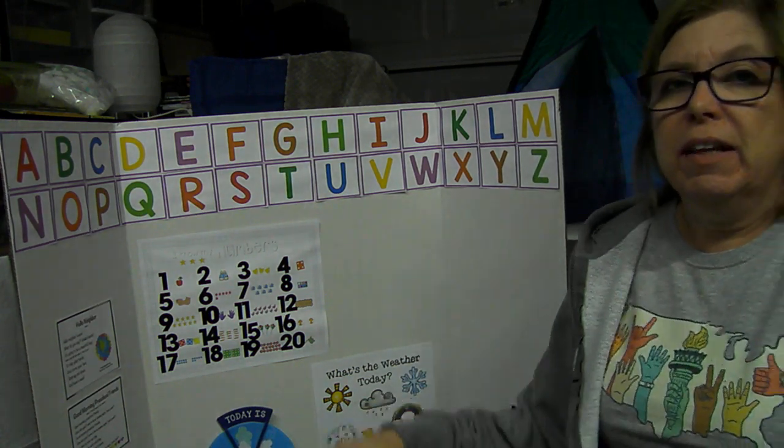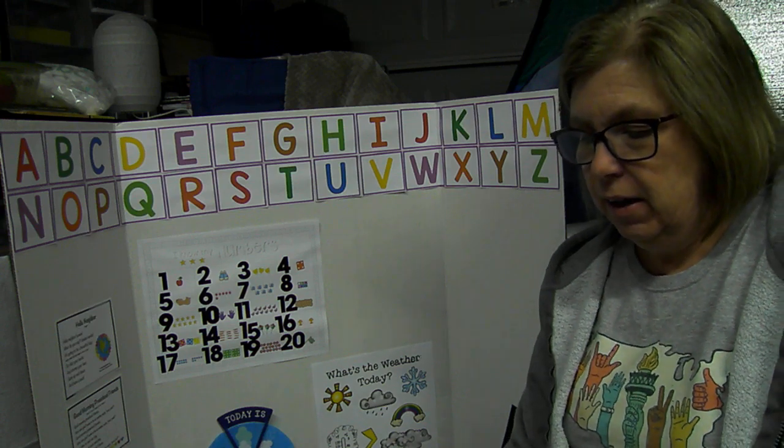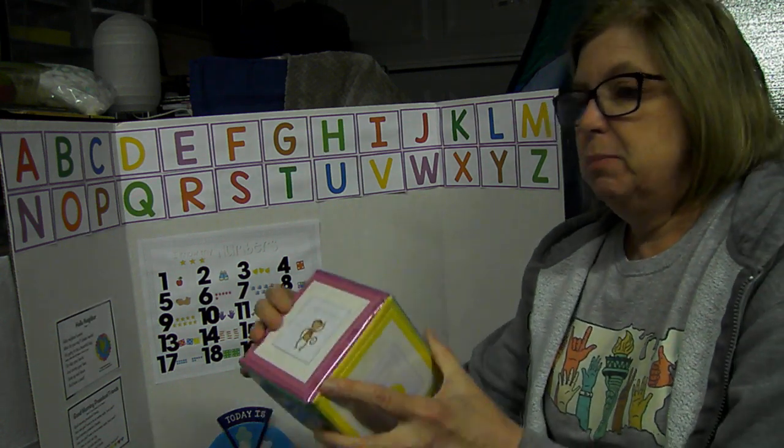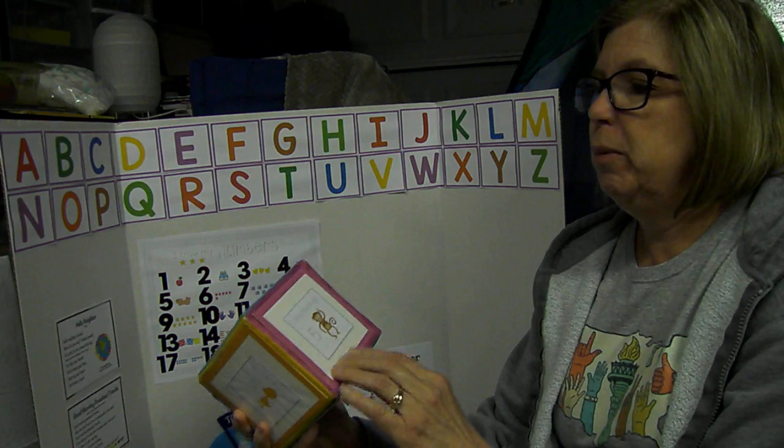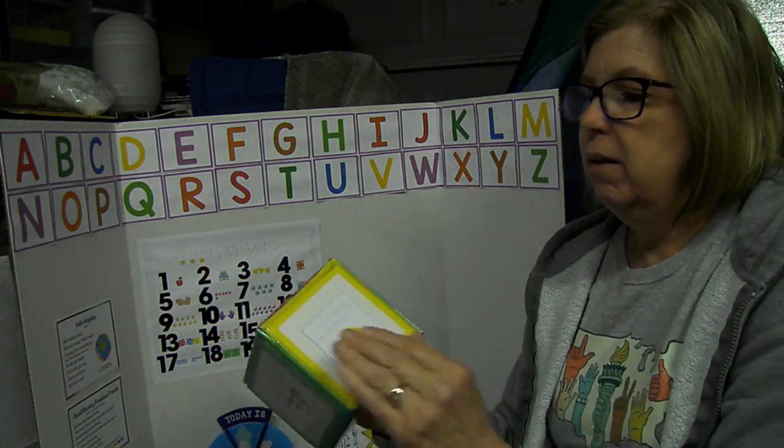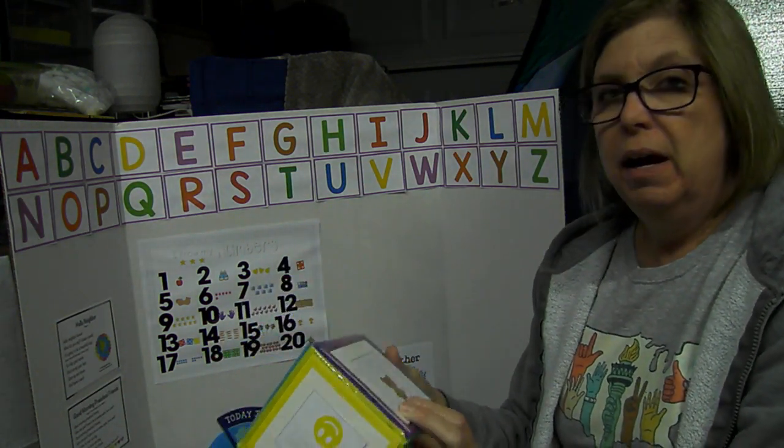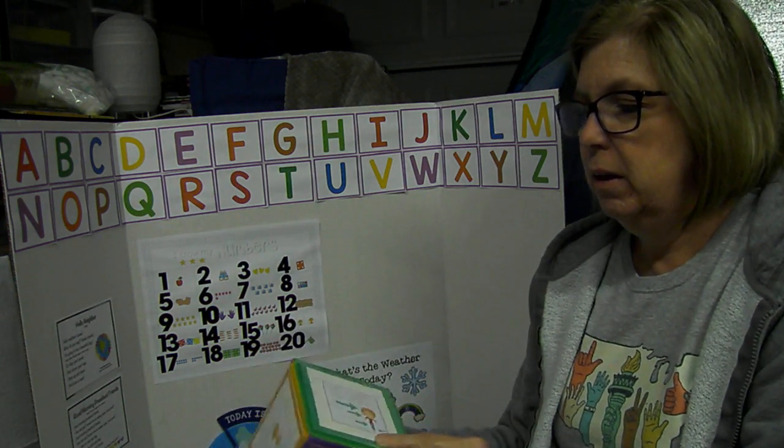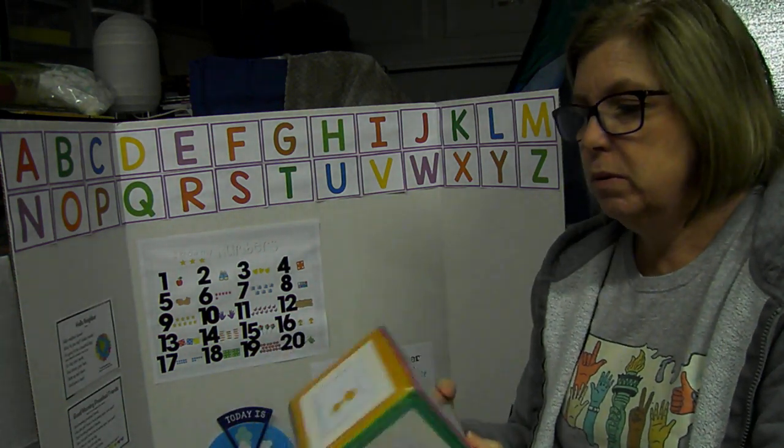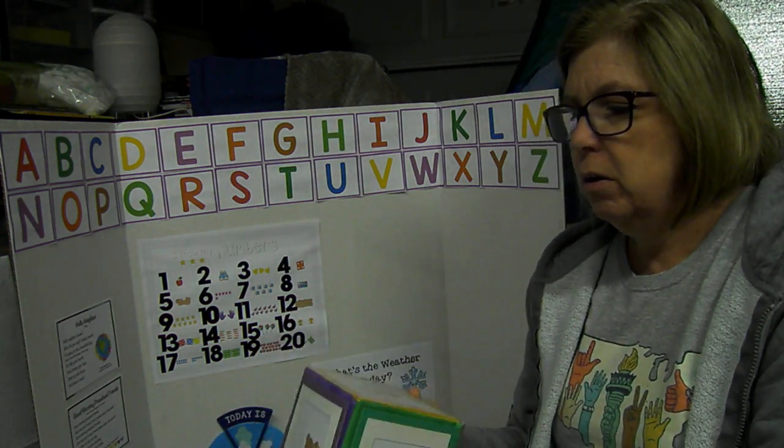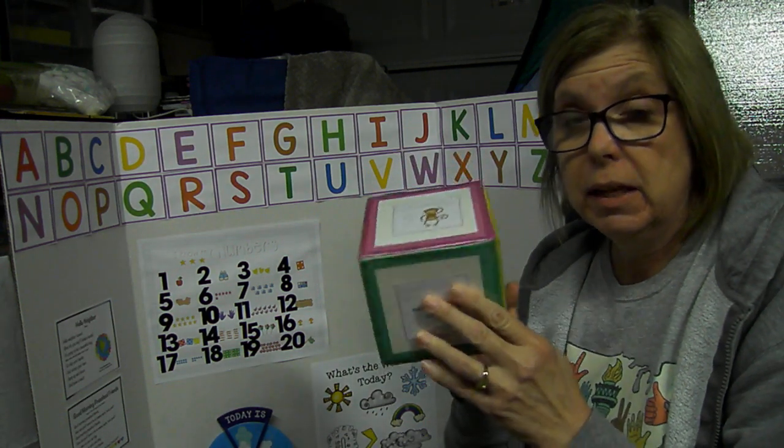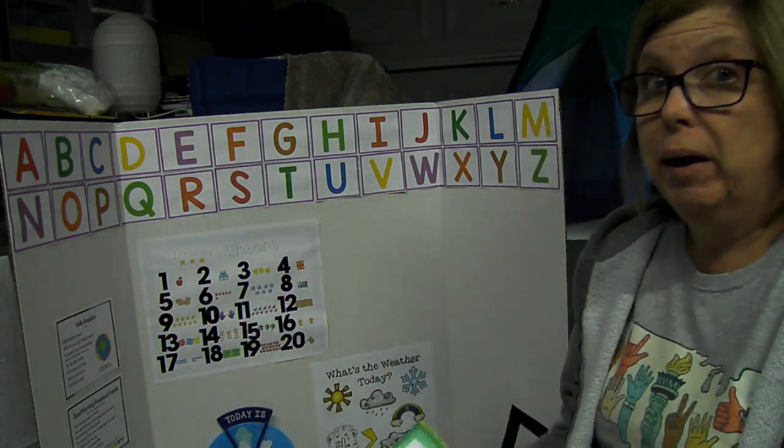And I have another new activity that I think you'll like a lot. I've got some songs here put into my little cube. I've got Five Little Monkeys. I've got If You're Happy and You Know It. I have Teddy Bear, Teddy Bear. Head, shoulders, knees, and toes. Anyway, this is just a little dice, and I'm going to toss it, and we'll see where it comes up.